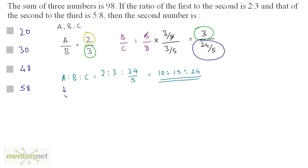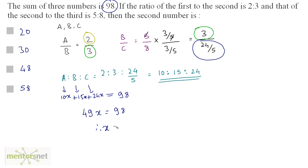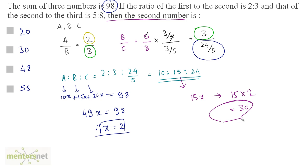So A is 10x, B is 15x and C is 24x, and their sum equals 98. So 10x plus 15x plus 24x is 49x equals 98, therefore x equals 98 by 49 which is 2. The second number is 15x, which equals 15 times 2 equals 30. So 30 is the second number and our answer is option B.